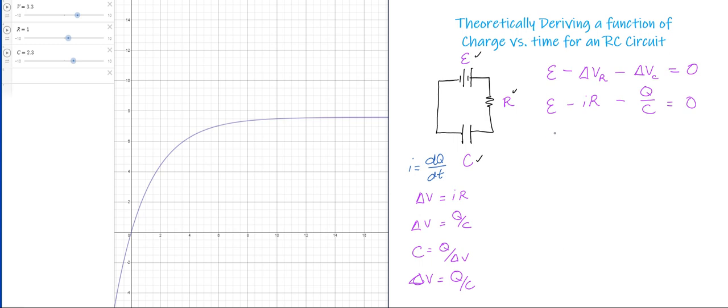I have EMF minus dQ/dt times R minus Q—it's really Q of t, it's a function—over C is equal to zero. And for the eagle-eyed among you, you probably notice that this is a function with its derivative in an equation, and so that's a differential equation. We could solve that, and the variable—or the equation I should say—that we're solving for here is Q as a function of time.